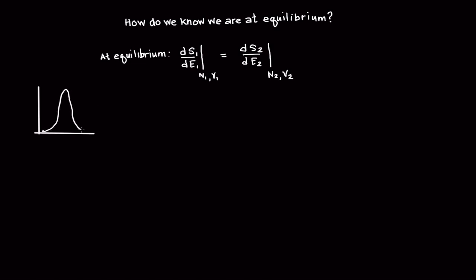Note that in the simple example scenario we considered earlier, it was not the case that the energy of each box was the same. It is the derivative of entropy with respect to energy for each box evaluated at the energy, number, and volume of each box that must be equal at equilibrium.